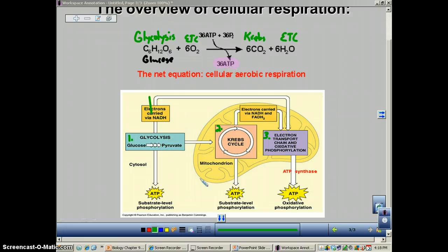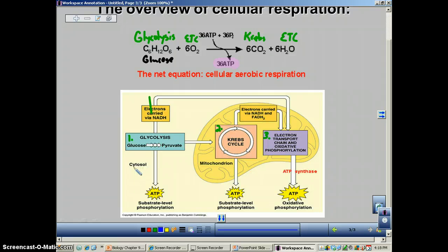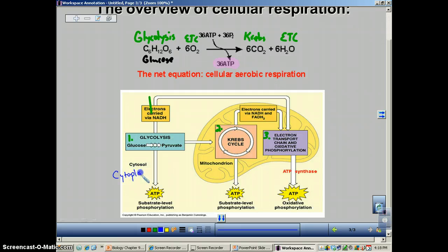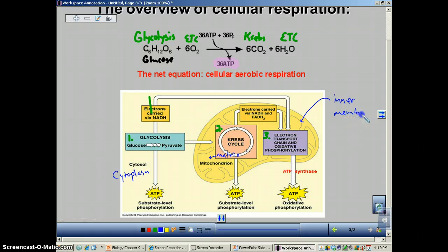Let's do some labeling down here in our picture. Cytoplasm and cytosol are the same thing. Remember glycolysis occurs in the cytoplasm. The Krebs cycle occurs in the matrix, and the matrix is all this stuff right here. So all this yellow stuff right here, that's the matrix. The electron transport chain is going to occur on the inner membrane. So that's all this line right here. I'm going to draw this blue. This is where the ETC occurs.